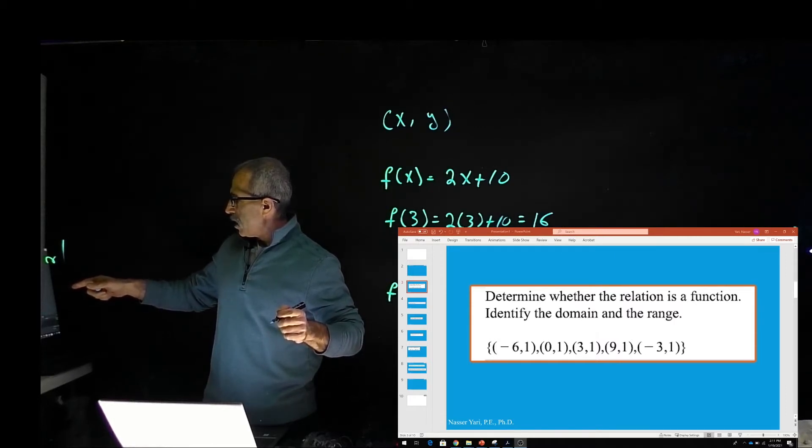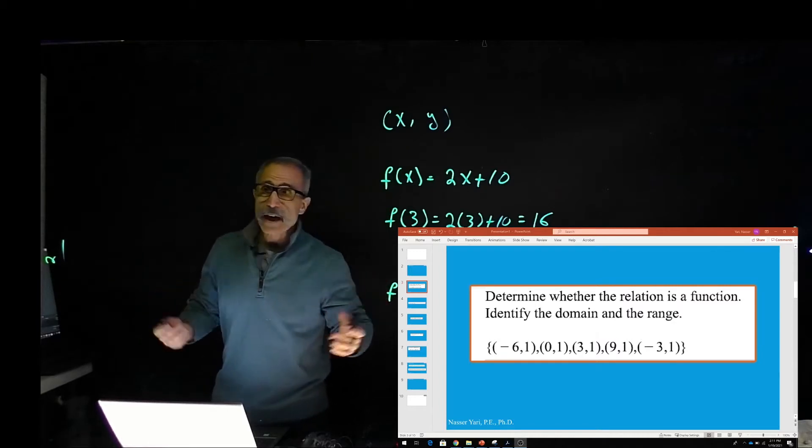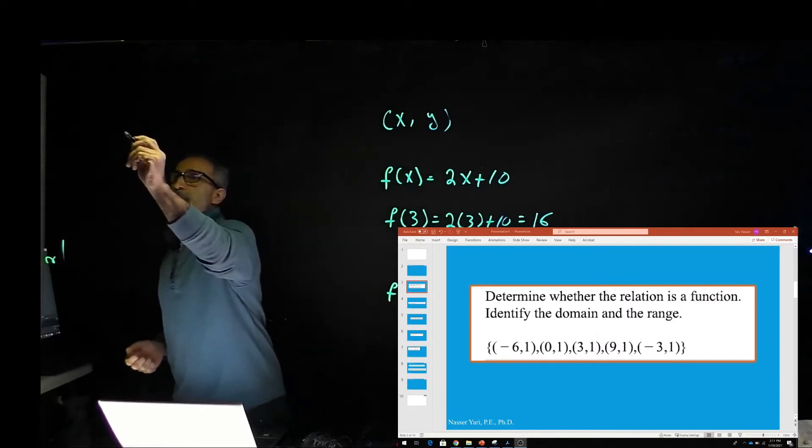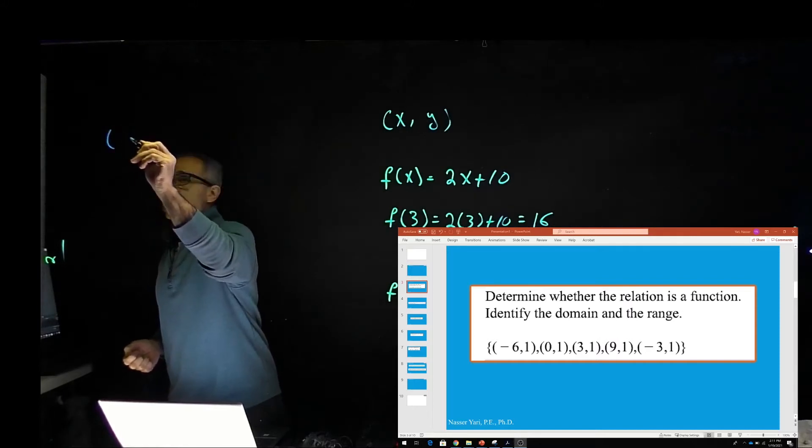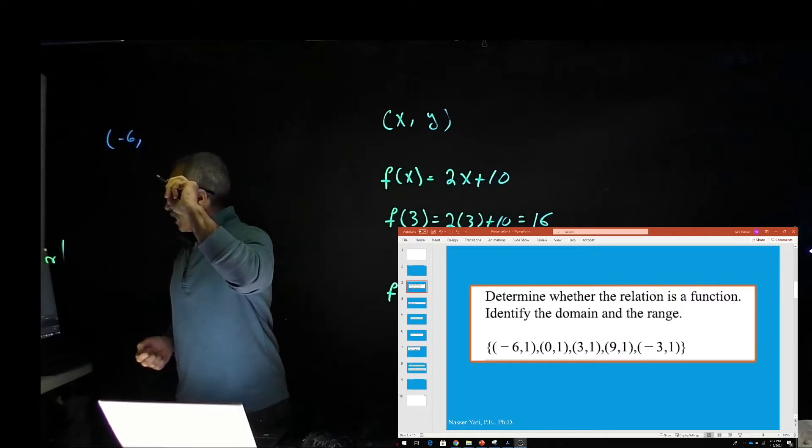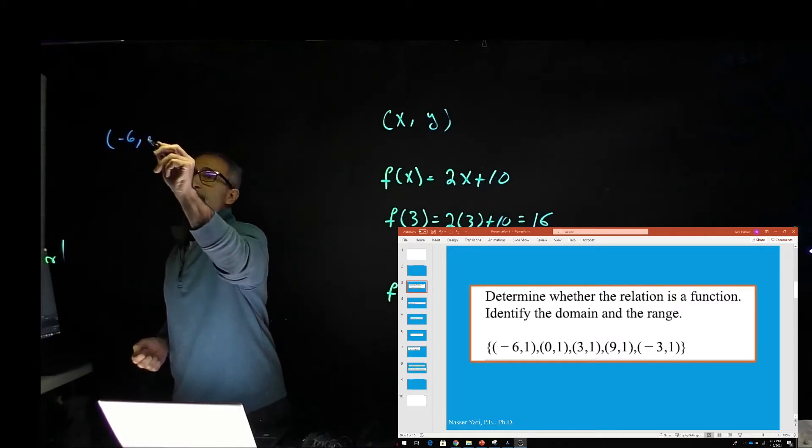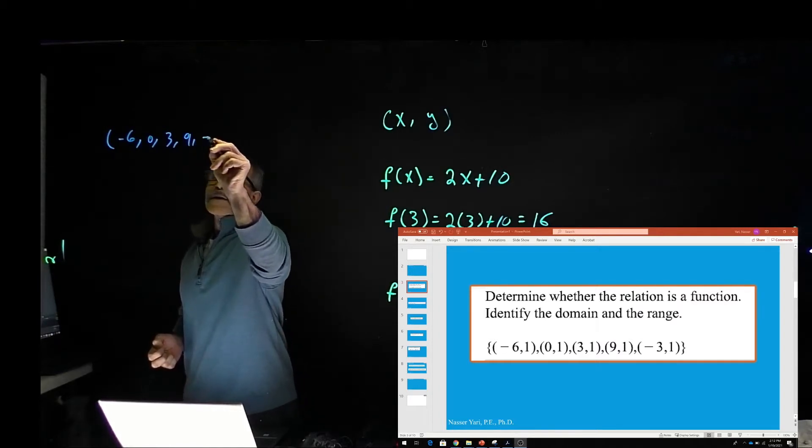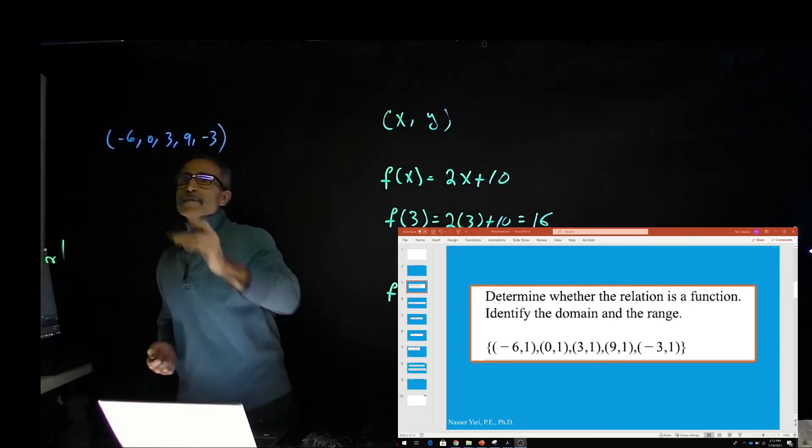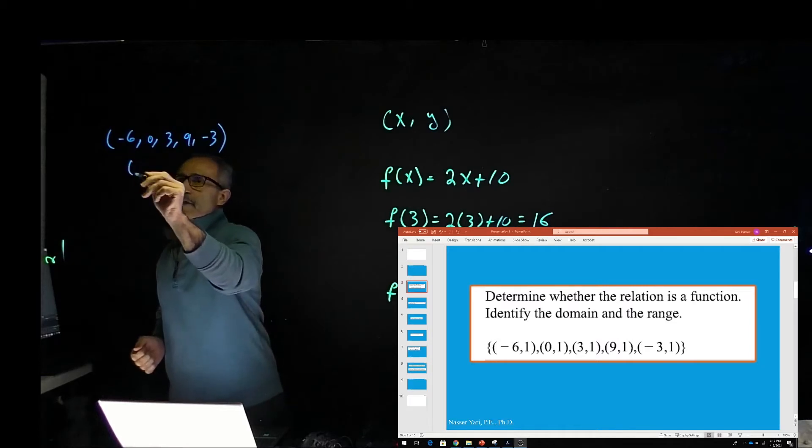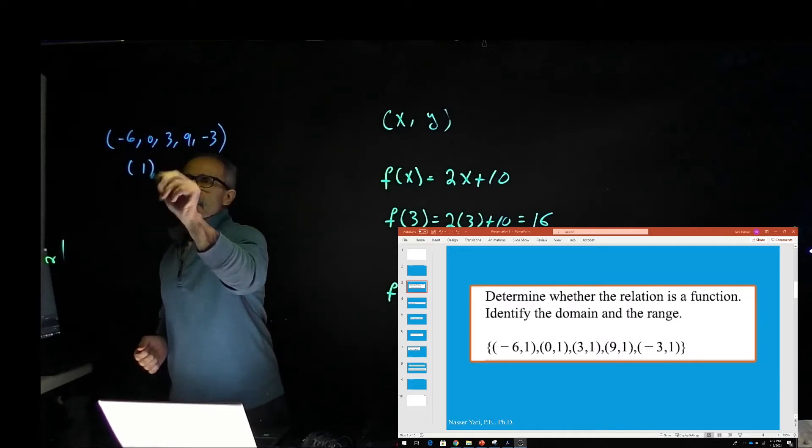So basically all our domain, which is our x, our domain should come out to -6, 0, 3, 9, and -3. These are our domain basically. And range is basically your y, and our range is only we have 1. So that's our range.